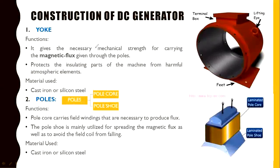The yoke is the outermost cover of the machine. Its function is to provide the necessary mechanical strength for carrying the magnetic flux produced through the poles. When current flows in the field windings, the poles behave as electromagnets and produce magnetic flux, and the yoke provides the path and strength for that flux to flow inside the machine. It also protects the insulating parts from harmful atmospheric elements. The material used for the yoke is cast iron or silicon steel.